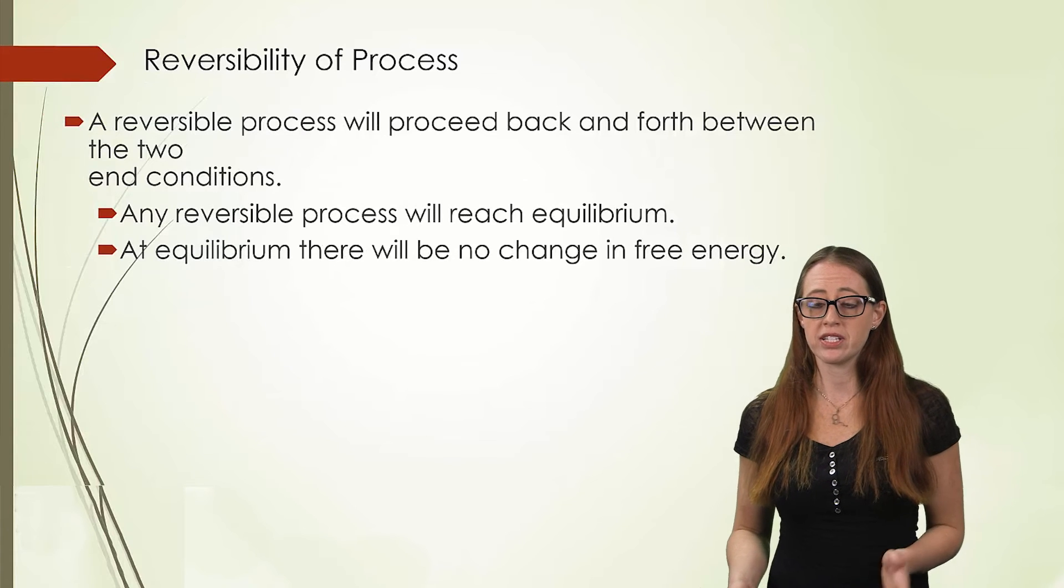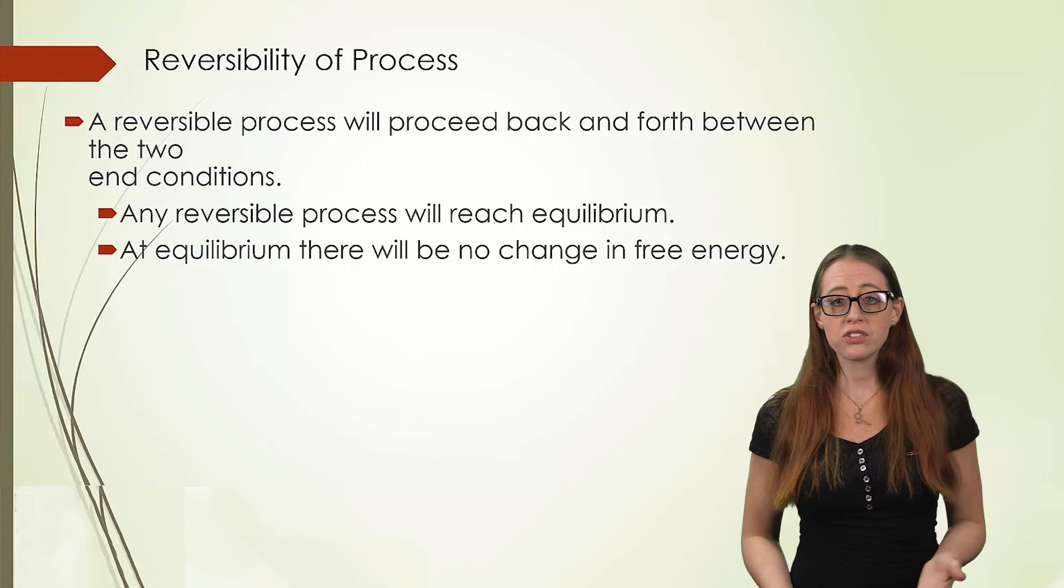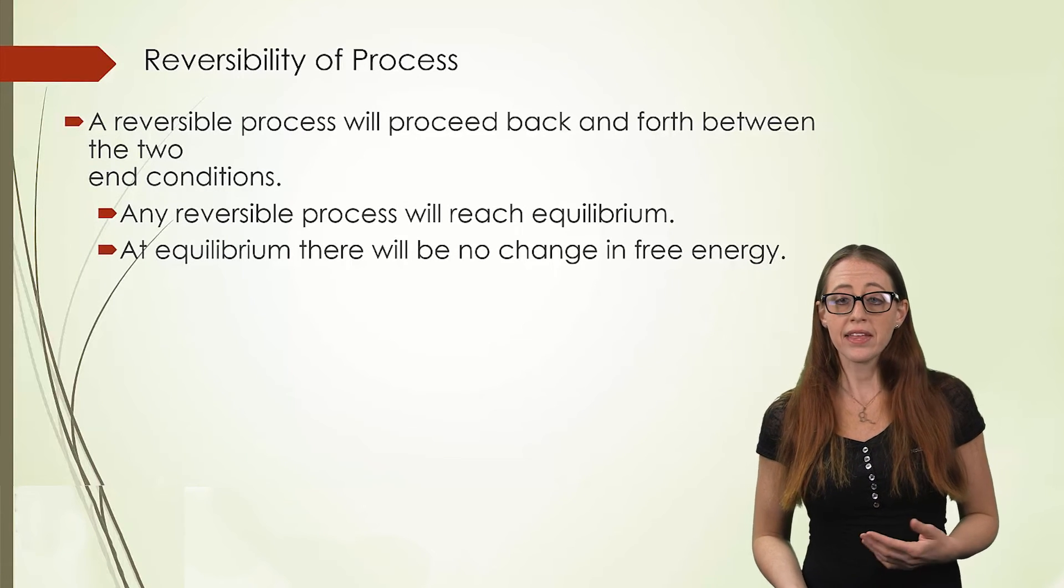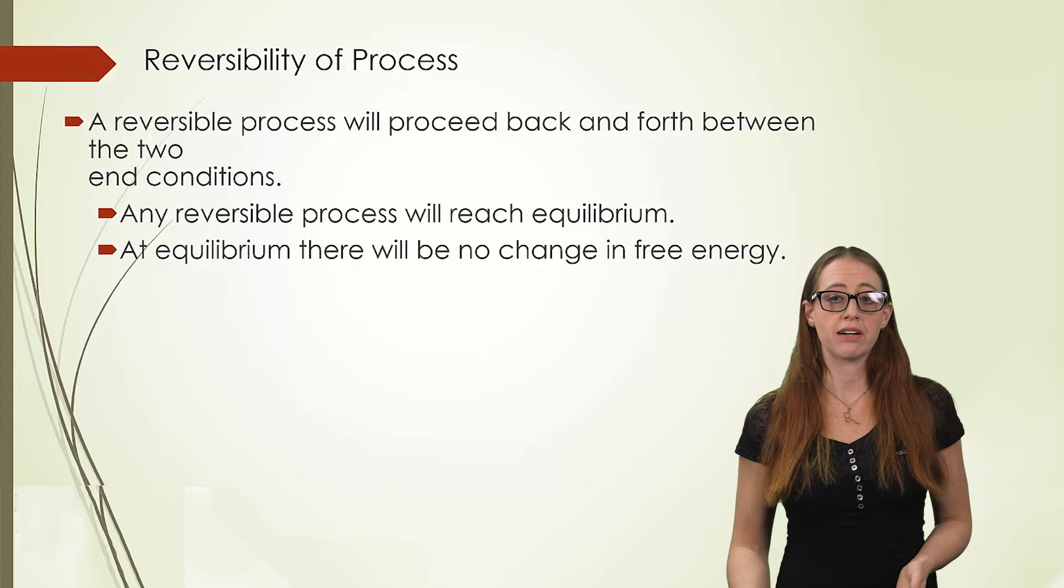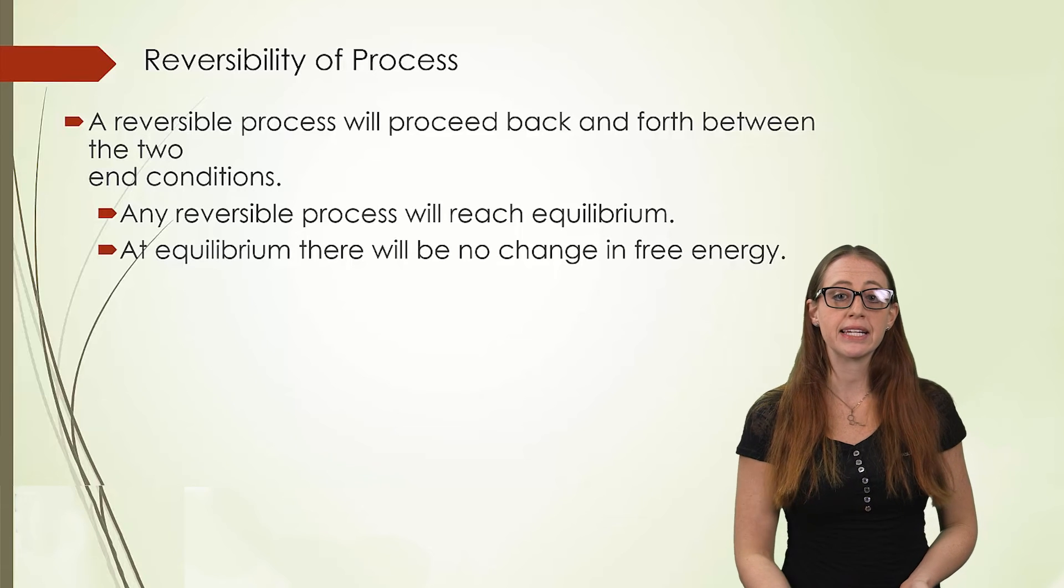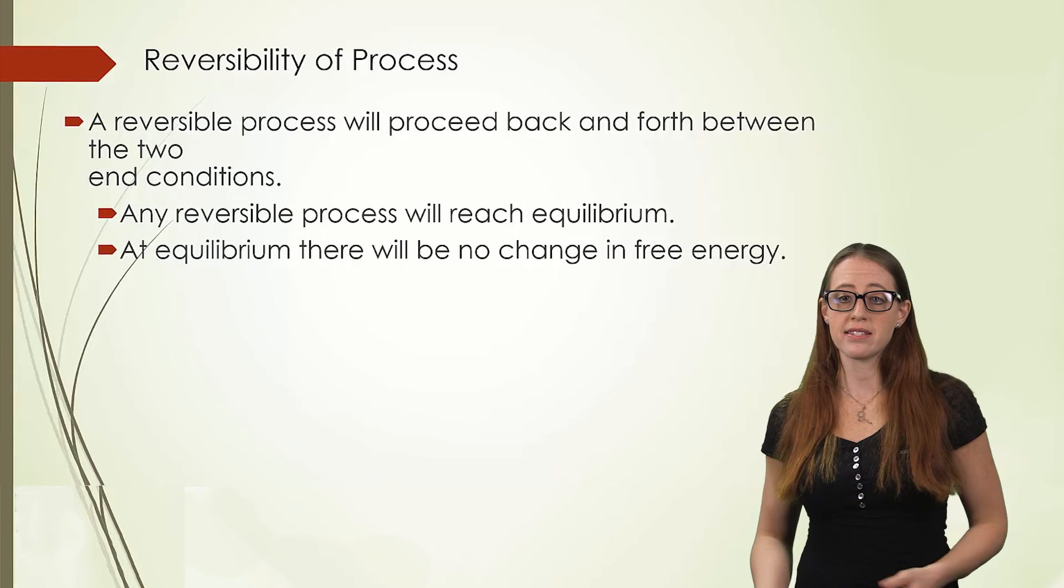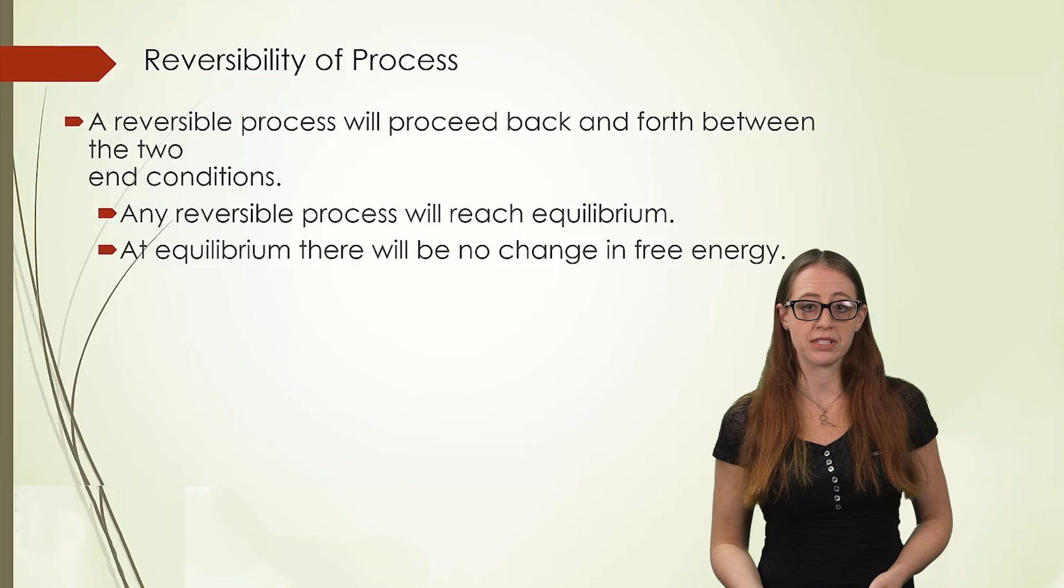There are examples of reactions that can go in both directions. These are called reversible processes, and they will generally reach an equilibrium. This too is something that we're going to cover in later chapters, but it's just worth noting that they exist here, so as to contrast them to the systems that we'll be talking about in this chapter.